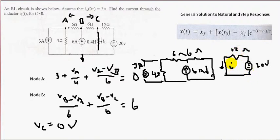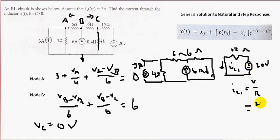Let's call it IL1. Using Ohm's law, V equals IR, so I equals V divided by R. We have 20 volts over 12 ohms, which equals 1.66 amps. That's IL1.